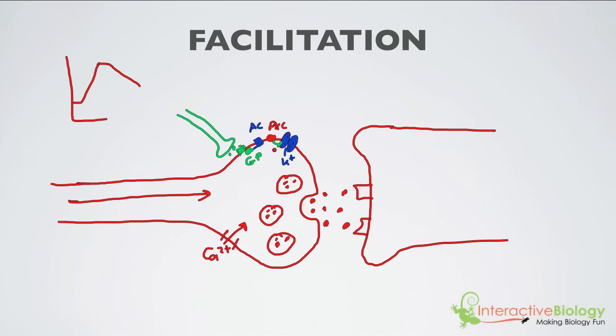It causes the action potential, the signal here, to last longer. And what that's going to do is it's going to cause more vesicles to fuse with the membrane, and you're going to end up with more neurotransmitter being released. That is going to result in a greater signal in the postsynaptic cell.